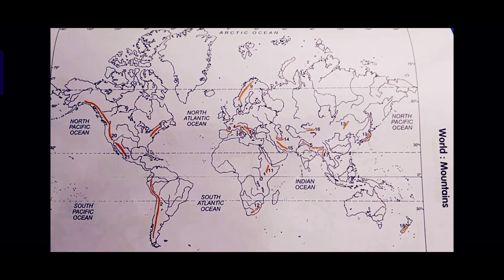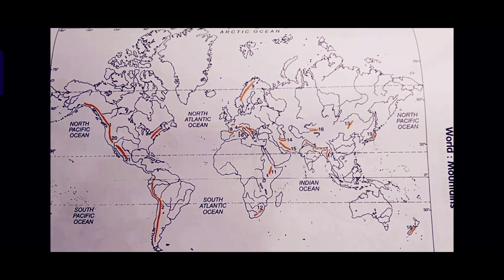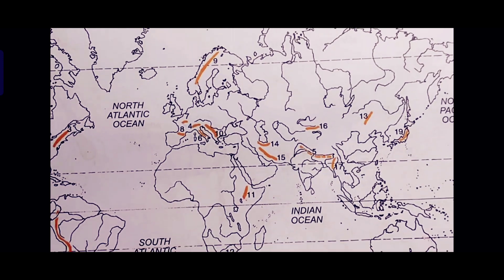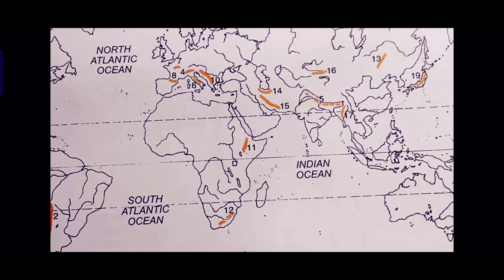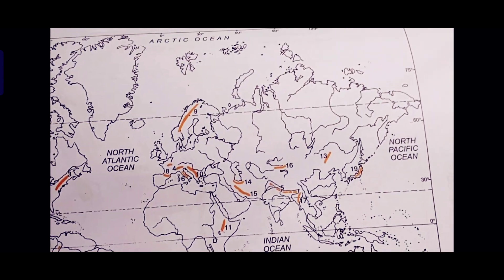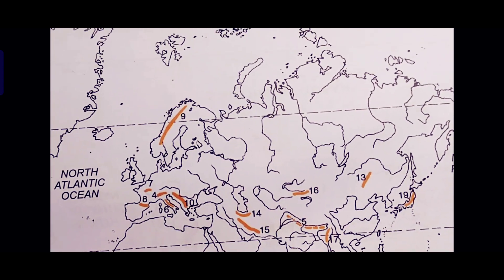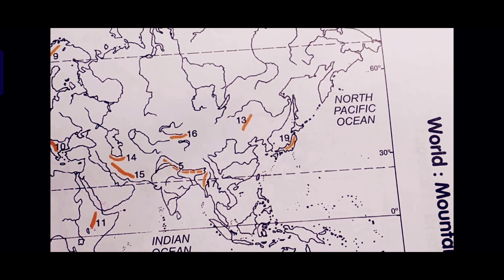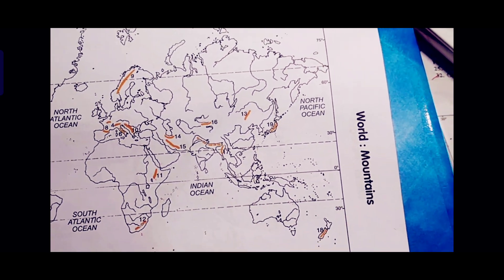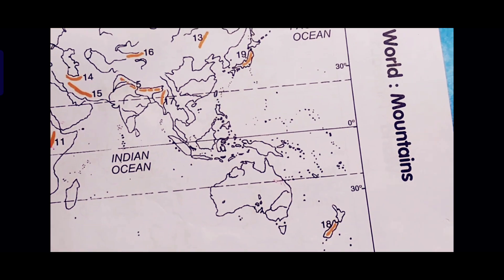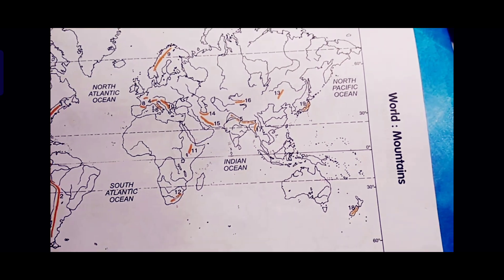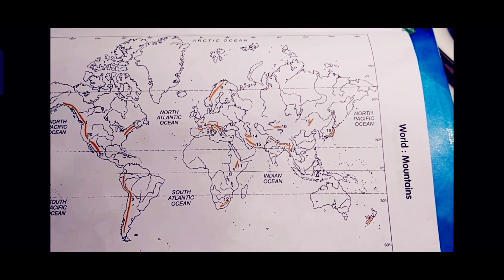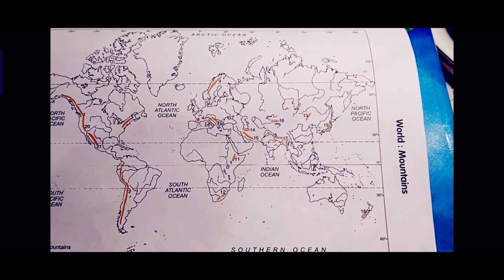Hi everyone, today we are going to learn about mismatched locations of mountains. There are many places mismatched in this world map — in Africa, numbers 12 and 11; in Europe, numbers 9, 8, and 14; and in Asia, number 13. Even in Australia, the Great Dividing Range is missing but is marked in Africa. So today we are going to learn about all the relief features, especially mountains, in this map.